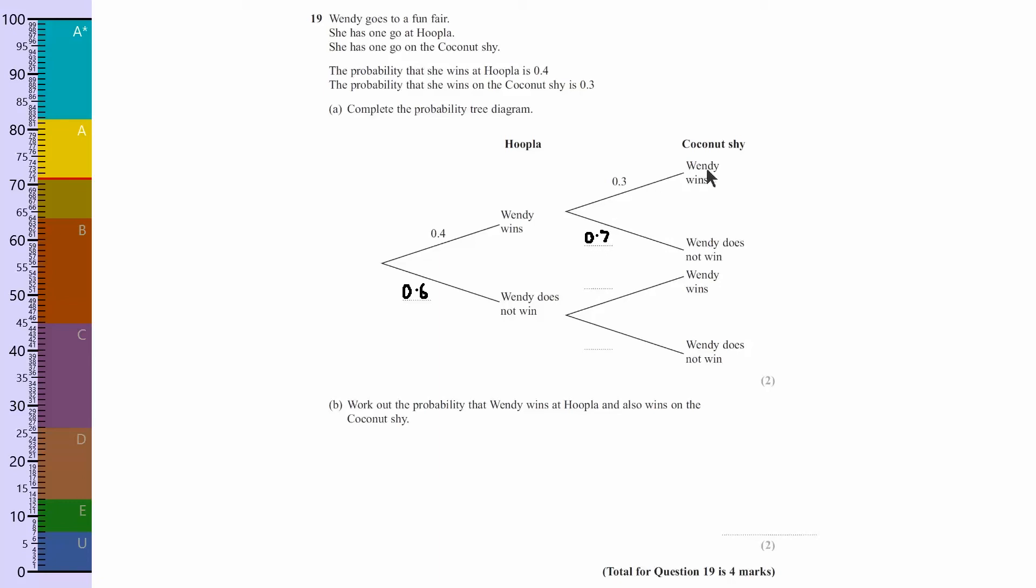Now the chance of Wendy winning is always 0.3, so we can just copy it down here. You've got to be careful that this isn't a conditional tree diagram, this is actually an independent one. So we just copy the probabilities there and there across, and that's absolutely fine. If it's conditional, then this one would be different. These two would be different to these two here, and that gives us two marks.